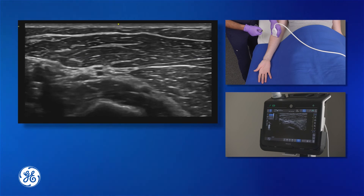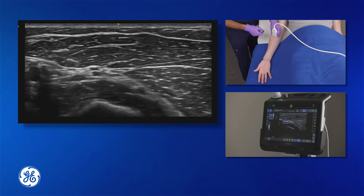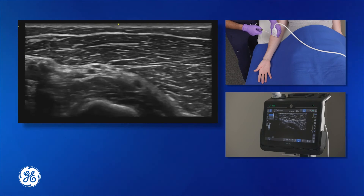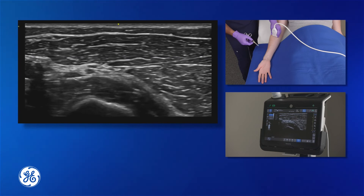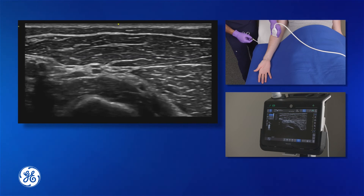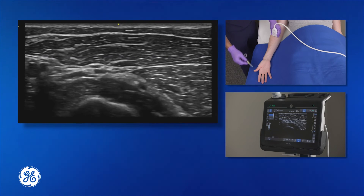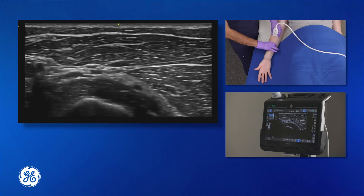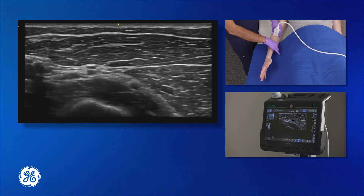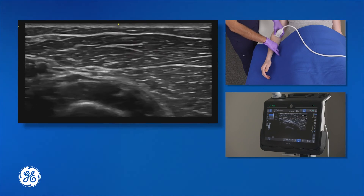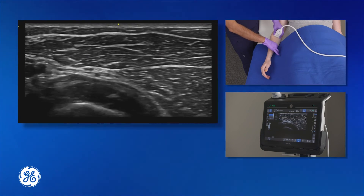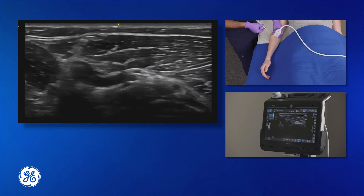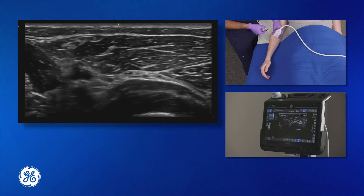The goal is to encircle the nerve in anesthetic, which allows for full anesthesia provided to the distribution of the radial nerve within the hand. Sometimes it is necessary to rotate the arm slightly, maintaining the view on the nerve, in order to bring the needle in at the proper angle.